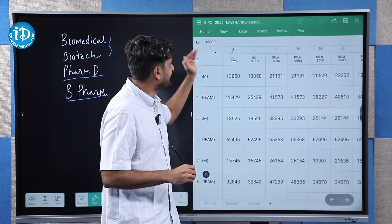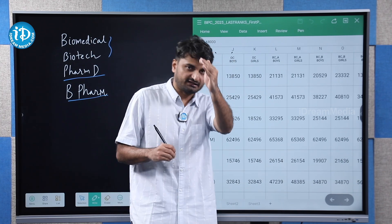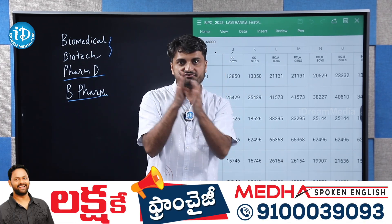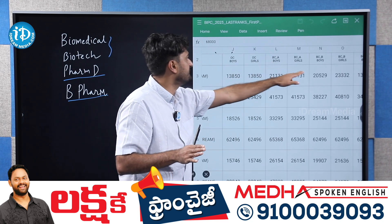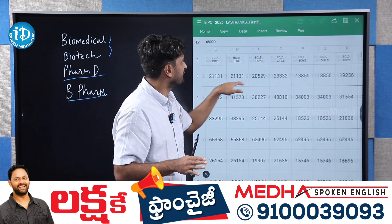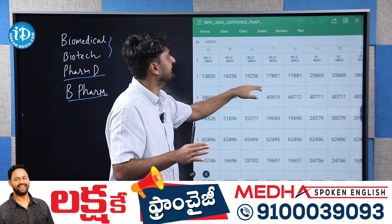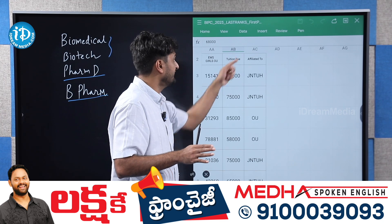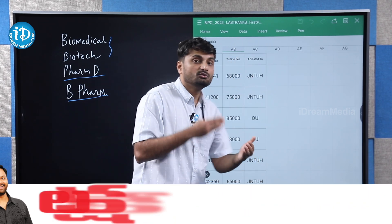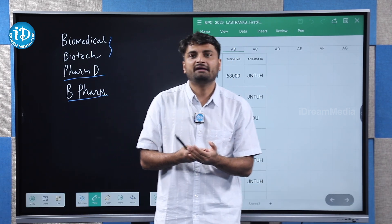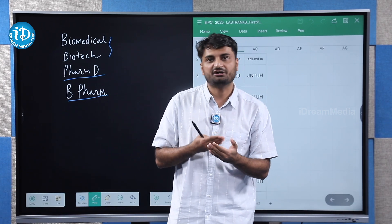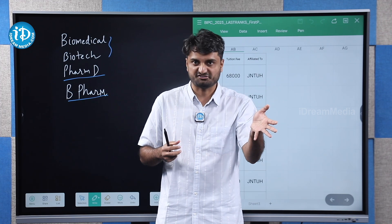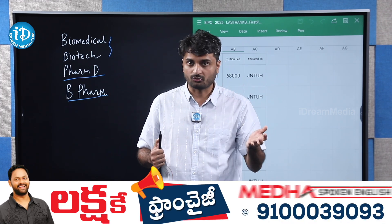You need to check cutoffs reservation category-wise. For OC category, there are separate boys and girls cutoffs, and BCA and BC girls cutoffs. There are many categories. Regarding university affiliation, we mainly have Osmania University, JNTU affiliated colleges, private universities, autonomous, and deemed universities.